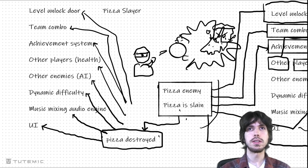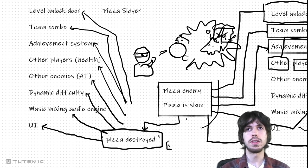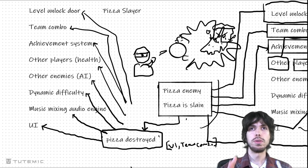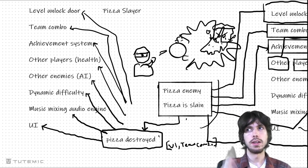So as soon as this pizza is slain and emits or invokes this pizza destroyed event, all of these other systems will be notified. The pizza destroyed event doesn't really understand anything about these other systems — all it knows is the list of subscribers. Pizza destroyed has this big list of subscribers and each of these things — UI, team combo, all the different things — are subscribers to this particular event. What we've done is essentially decoupled the pizza enemy from all these other systems.